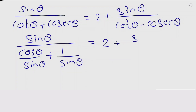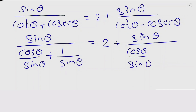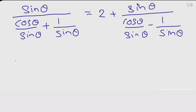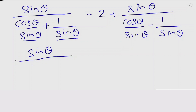...sin θ as it is. On the RHS, cot θ we can write as cos θ divided by sin θ, minus cosec θ we can write as 1 divided by sin θ. Now on the LHS, sin θ as it is divided by — here take sin θ as LCM — so it becomes cos θ plus 1 divided by sin θ.